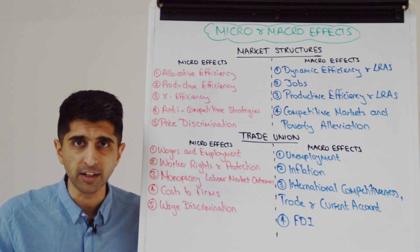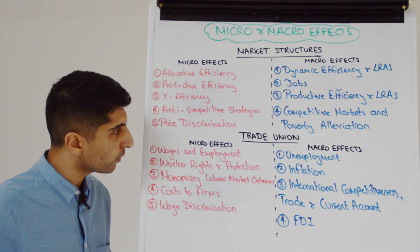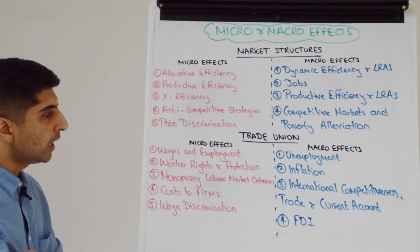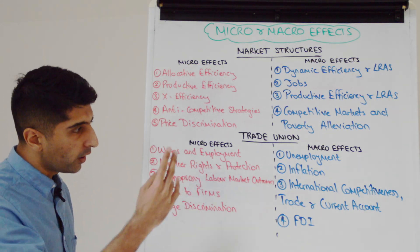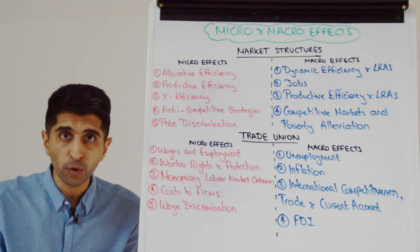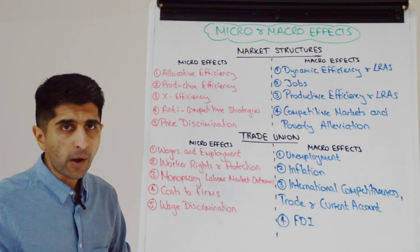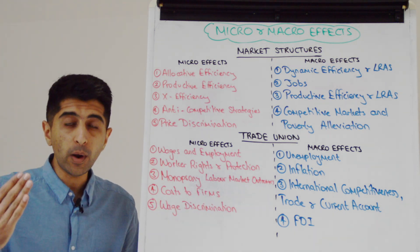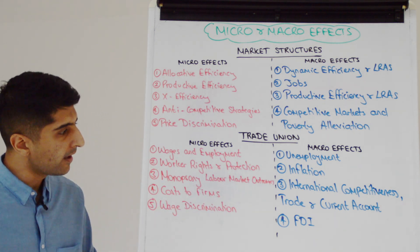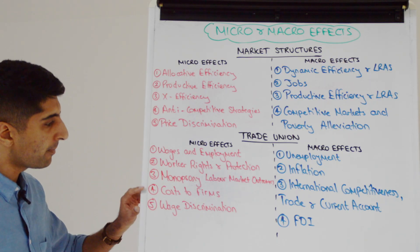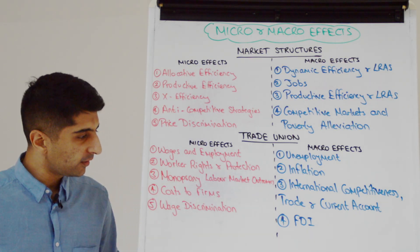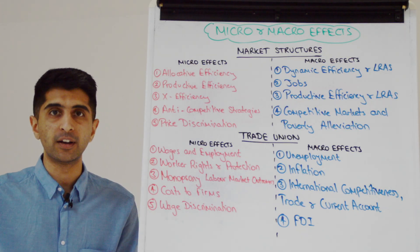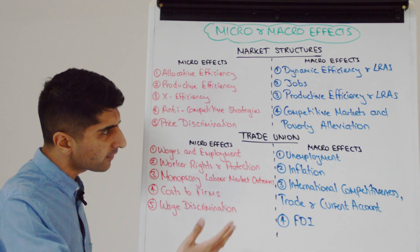What about the topic area of trade unions? Again, it screams very micro. The micro effects include the impact on the labour market, wages and employment. We know trade unions fight for worker rights and protections — definite stakeholder impacts. We know how trade unions actually improve outcomes in a monopsony labour market, not just increasing wages but also increasing employment. We can also talk about the cost burden to firms as a micro effect.